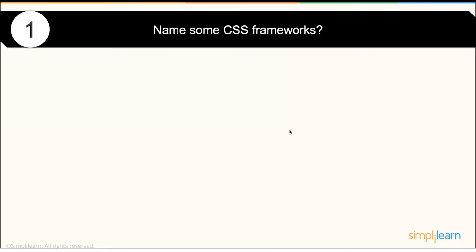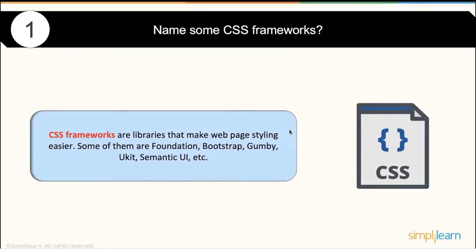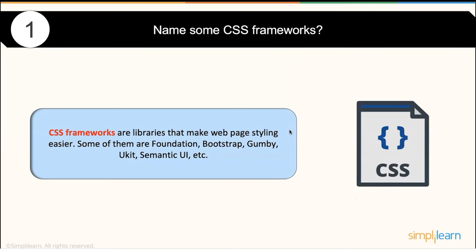Name some CSS frameworks. In the CSS environment, so many frameworks are available. CSS frameworks are basically libraries which offer popular ready-made components that you can utilize in your existing project — without writing much code, you can create some awesome effects. Some very popular libraries are Foundation, Bootstrap, Gumby, UIKit, Semantic UI, and many more.